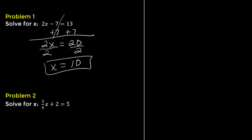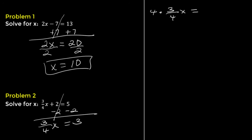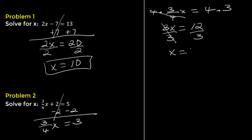Problem 2. Solve for x: 3x over 4 plus 2 equals 5. Subtract 2 from both sides. Positive 2 and negative 2 cancel, giving 3x over 4 equals 3. Multiply both sides by 4. The 4s cancel on the left side, leaving 3x equals 12. Then divide both sides by 3. The solution is x equals 4.